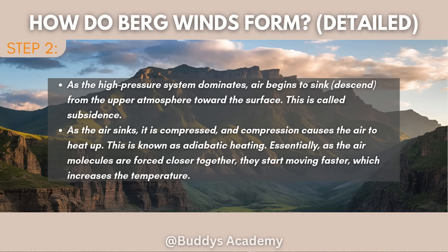As the high pressure system dominates, air begins to sink or descend from the upper atmosphere towards the surface — this is called subsidence. As the air sinks, it is compressed, and compression causes the air to heat up. This is known as adiabatic heating: the compression of air causes it to warm up. As the air molecules are forced closer together, they start moving faster, which increases the temperature. Bergwinds can reach temperatures of 30 degrees Celsius or more.